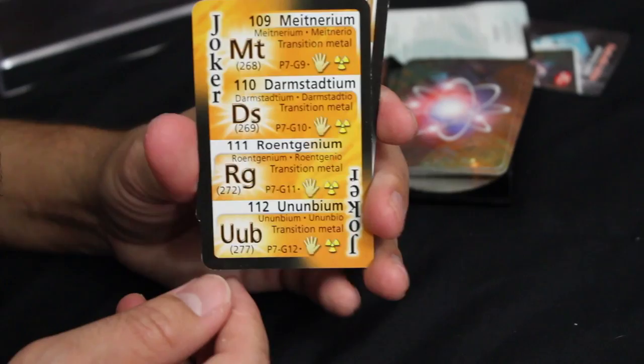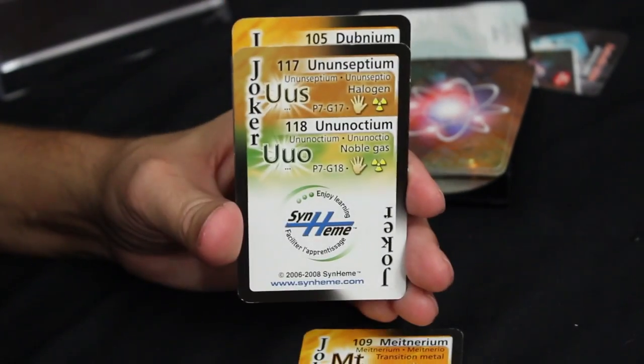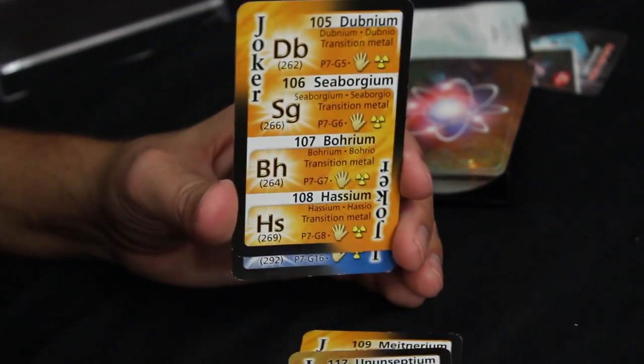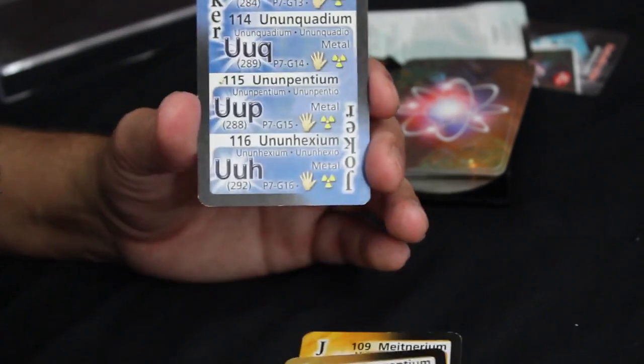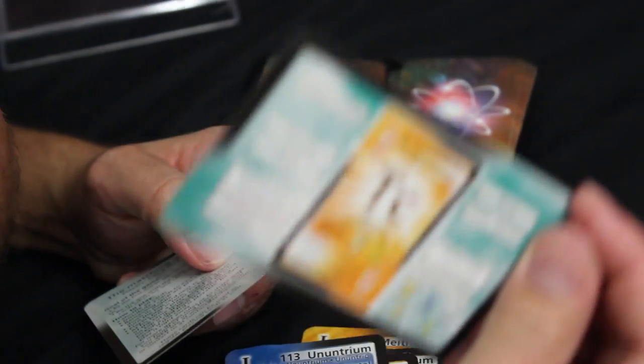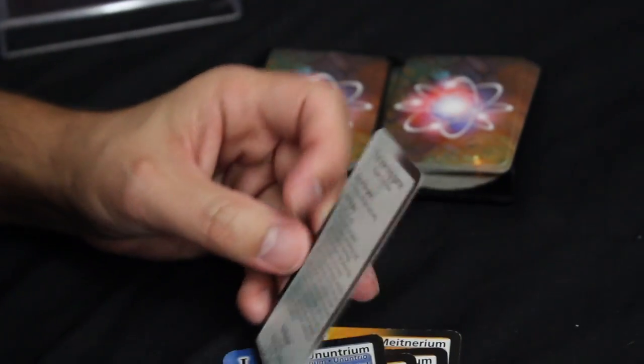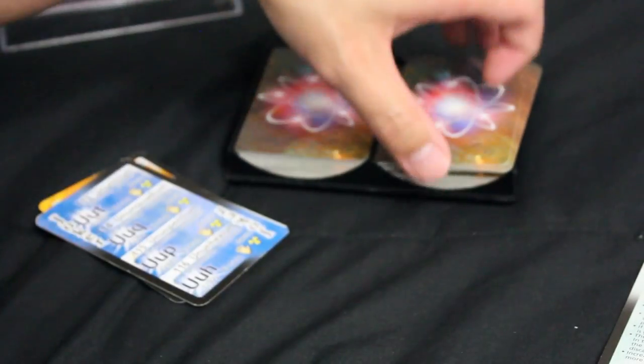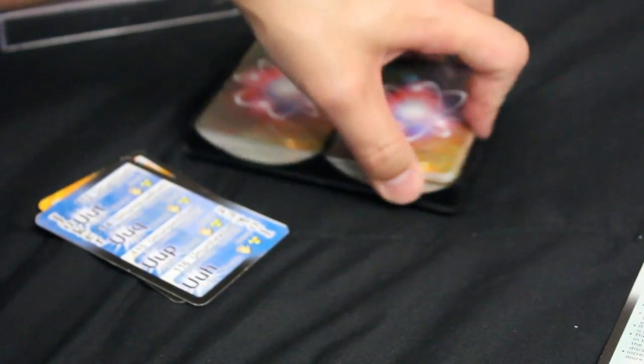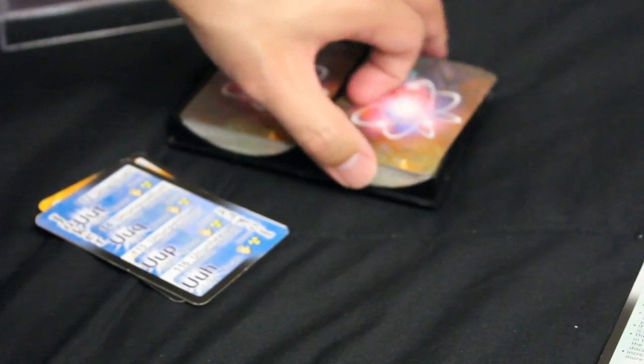And those jokers again. And there's a little playing guide card, and then there's like a learning game where it's kind of like flash cards and you talk about the properties of each element, how much the atomic weight, atomic number, and whatnot.